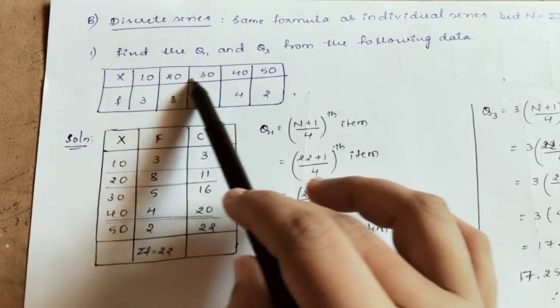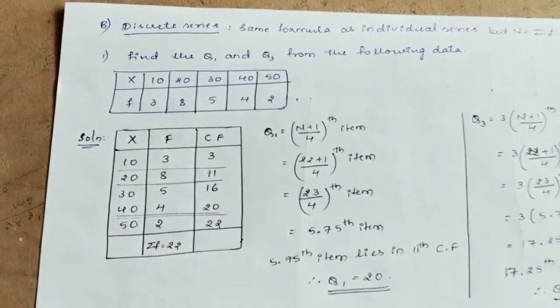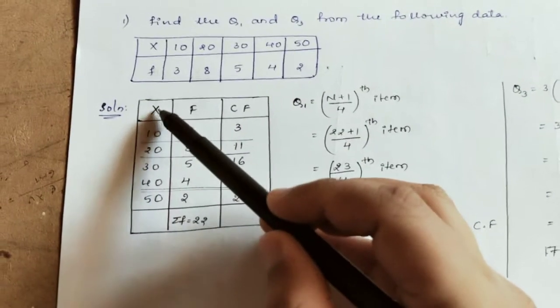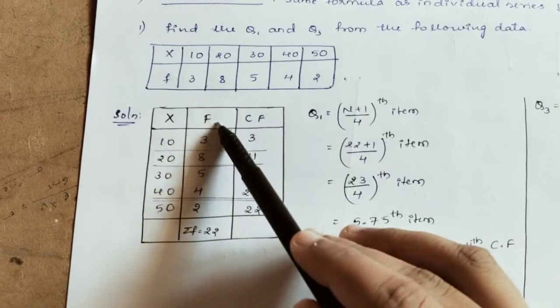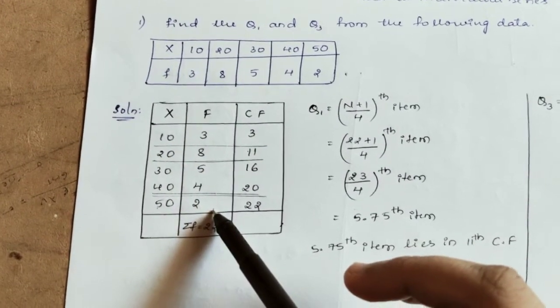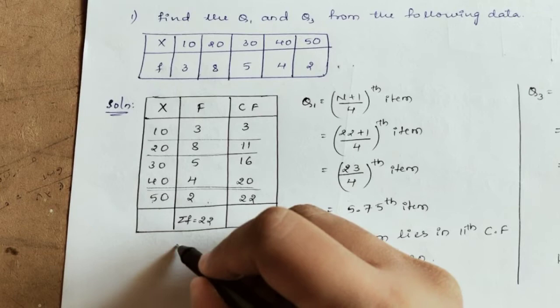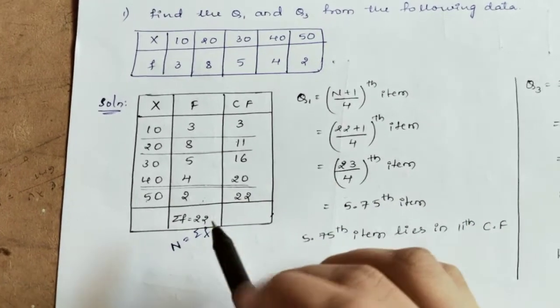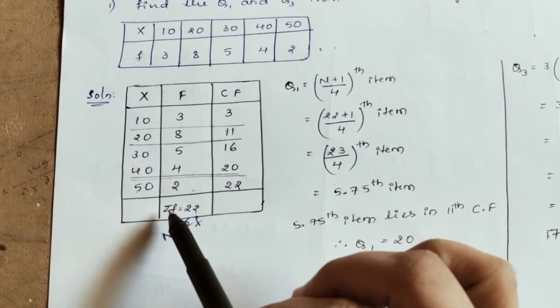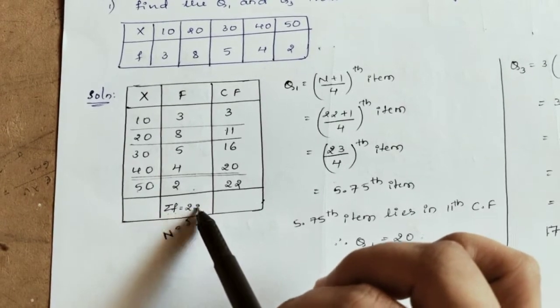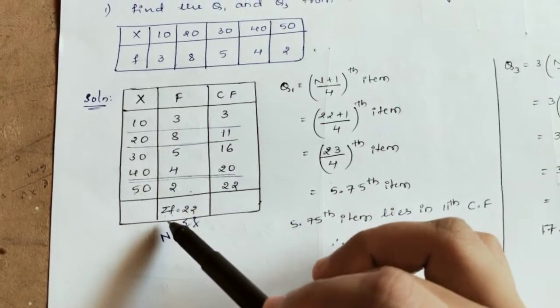Here we have X as the variable with values 10, 20, 30, 40, 50, and F as the corresponding frequencies. We tabulate X and F values. In discrete series, n equals the summation of F. The summation of F is 22: 3 plus 8 plus 5 plus 4 plus 2.